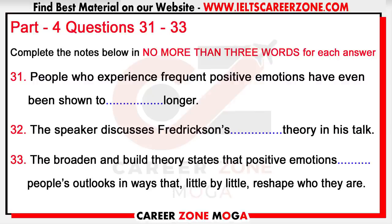Thus, the personal resources accrued, often unintentionally, through frequent experiences of positive emotions are posited to be keys to later increases in well-being. Put simply, the broaden-and-build theory states that positive emotions widen people's outlooks in ways that, little by little, reshape who they are.